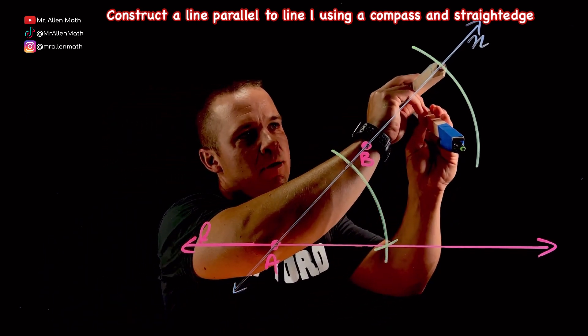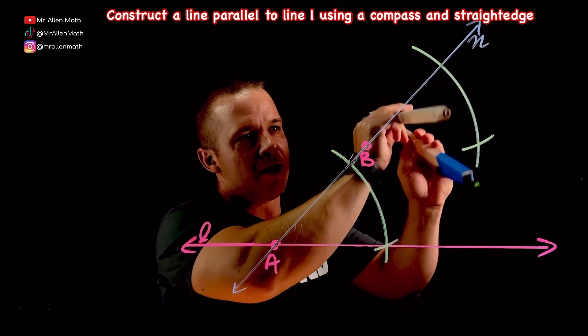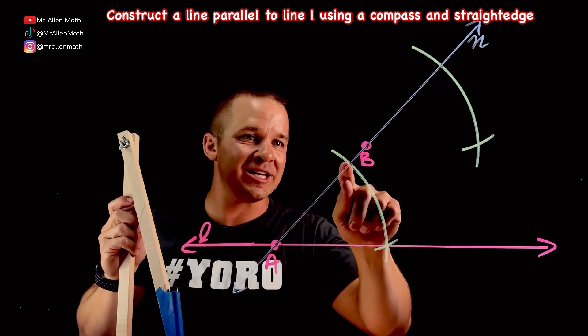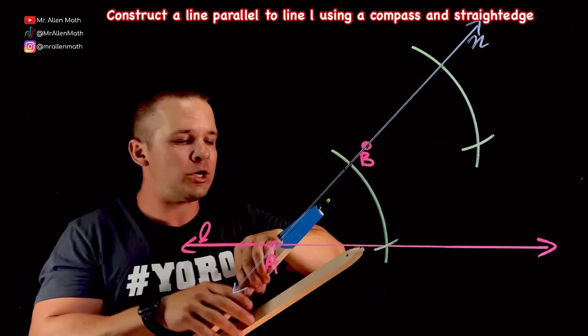I can do the same thing up here. So I'm going to take this guy up here, and now I'm going to intersect right there, and I have this new point here that's the same distance on this arc, on that arc.